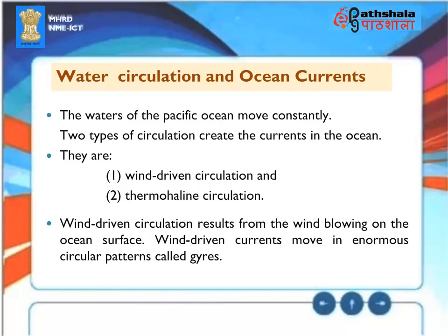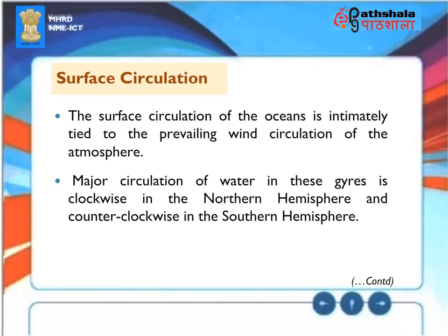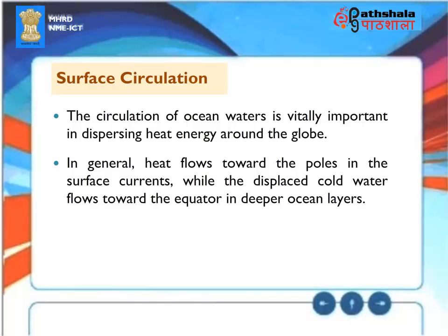Water Circulation and Ocean Currents: The waters of the Pacific Ocean move constantly, driven by two types of circulation: wind-driven circulation and thermohaline circulation. Wind-driven circulation results from wind blowing on the ocean surface, creating enormous circular patterns called gyres. Major circulation in these gyres is clockwise in the northern hemisphere and counterclockwise in the southern hemisphere. The circulation of ocean waters is vitally important in dispersing heat energy around the globe, with heat flowing toward the poles in surface currents while cold water flows toward the equator in deeper ocean layers.